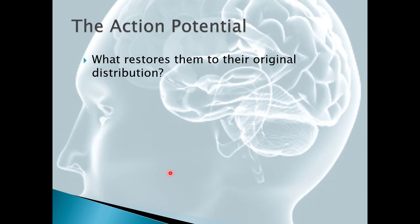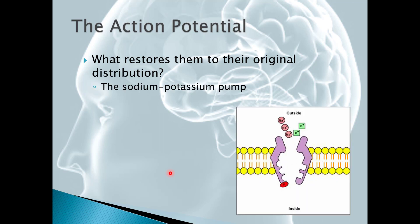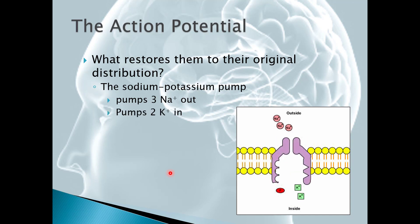So what's going to restore them to that original distribution? Something we talked about earlier is the sodium-potassium pump. So remember the sodium-potassium pump is going to pump three sodium out using ATP. And then it changes configuration and pumps two potassium in. And of course it requires ATP each time.